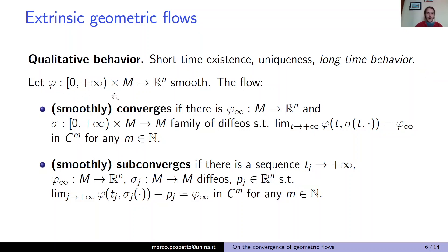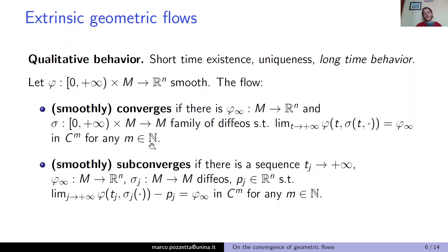We say that the flow smoothly converges if there is a limit immersion φ_∞ and a one-parameter family of diffeomorphisms of the domain such that the full limit as t → +∞ of φ(t) composed with the diffeomorphisms exists and equals φ_∞, and the limit occurs in C^m for any m. The convergence is the existence of the full limit approaching a fixed immersion.